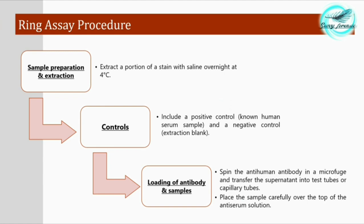For the ring assay procedure, first we extract the sample received from the crime scene. A portion of the stain is usually extracted in saline overnight at 4°C. Positive and negative controls are included.